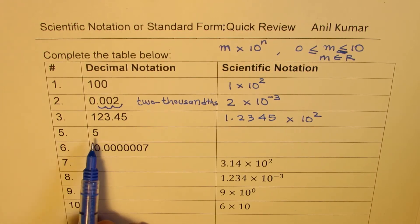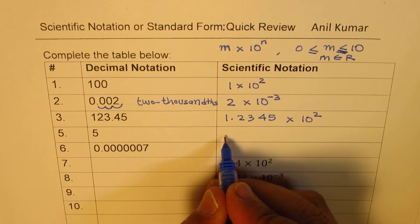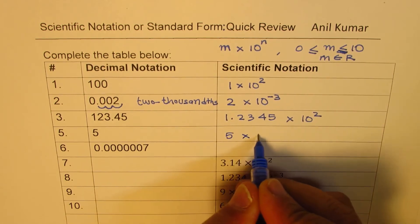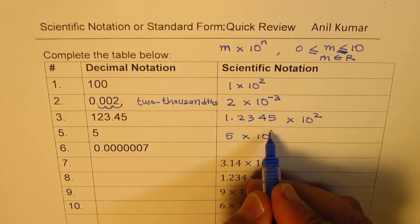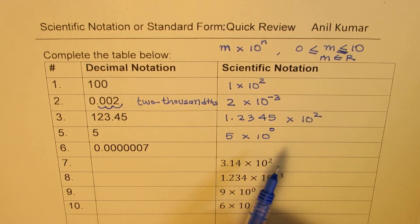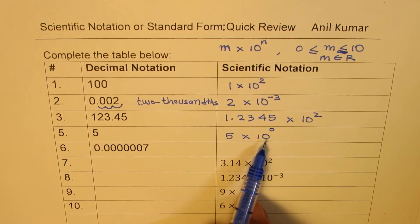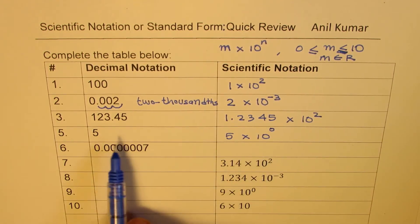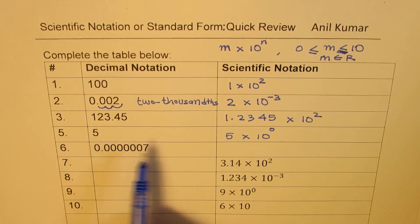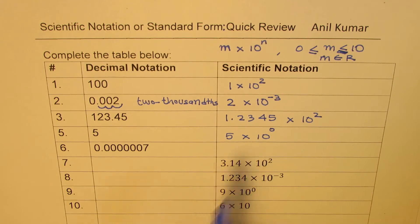If we have just the number 5, then we'll write 5 times 10 to the power of 0. Anything to the power of 0 is 1, and that is the way to write the number 5 or any individual single-digit number in scientific notation.